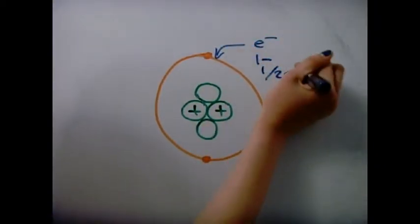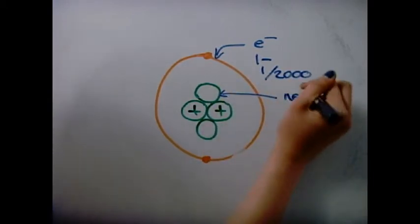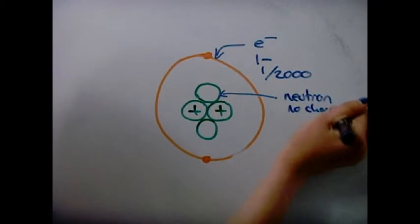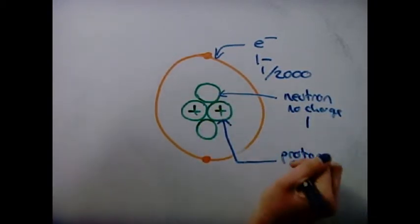Electrons have a 1 minus charge and a relative mass of 1 divided by 2000. Neutrons have no charge and a relative mass of 1. Protons have a 1 plus charge and a relative mass of 1.